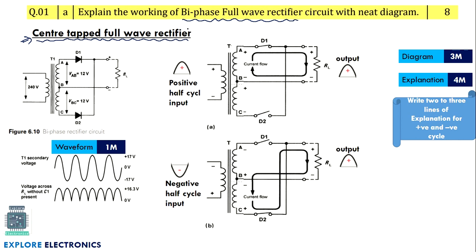So if the question contains 'center tapped full wave rectifier' it is the same as biphase full wave rectifier — the question may come either way. For this we need to write the circuit of the center-tapped full wave rectifier containing two diodes. In the positive half cycle D1 becomes forward biased and D2 becomes reverse biased. When the negative half cycle is applied D1 becomes reverse biased and D2 becomes forward biased.